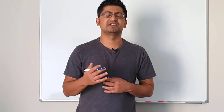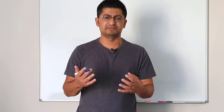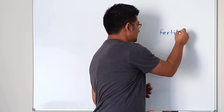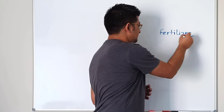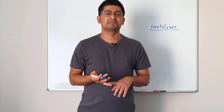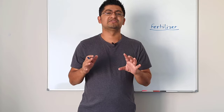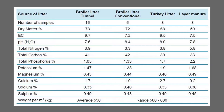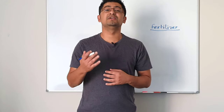So let's talk about some of the uses of poultry litter, specifically broiler litter. The first important use is it can be used as a fertilizer. Broiler litter is really high in nitrogen, phosphorus, and potassium, which are really important nutrients for plants. If you look at this table, broiler litter has almost 4% nitrogen, almost 1% phosphorus, and almost 1.5% potassium. That means it is a really good source of NPK.